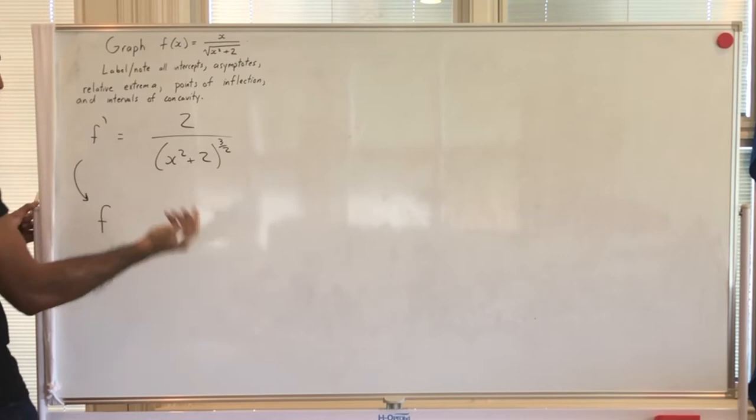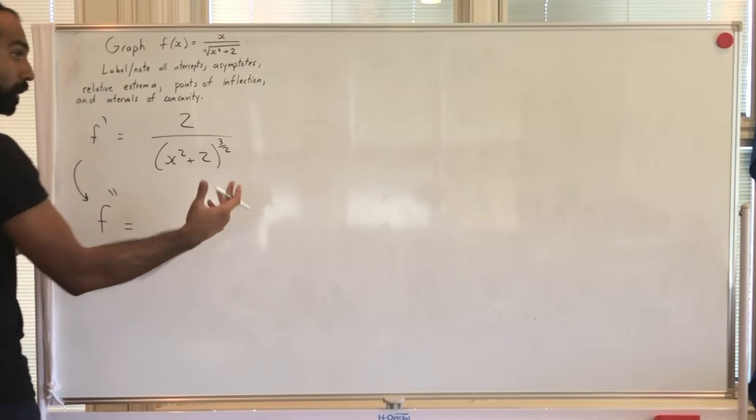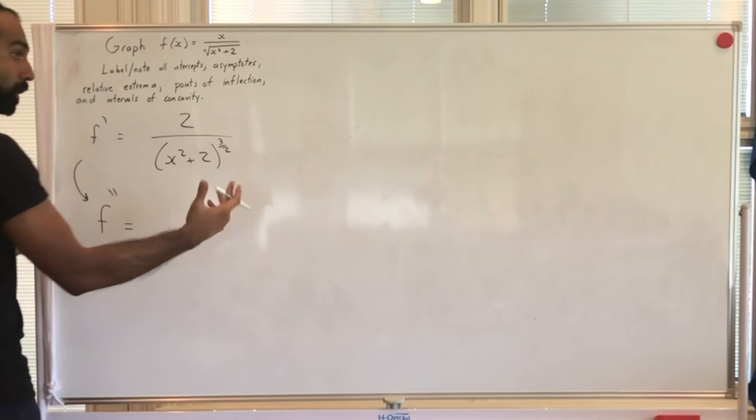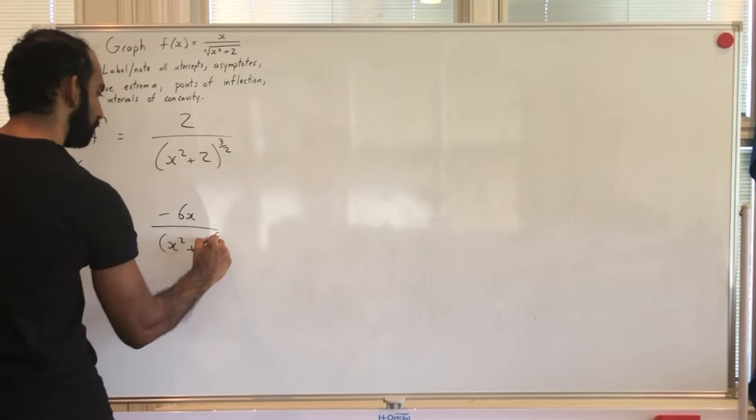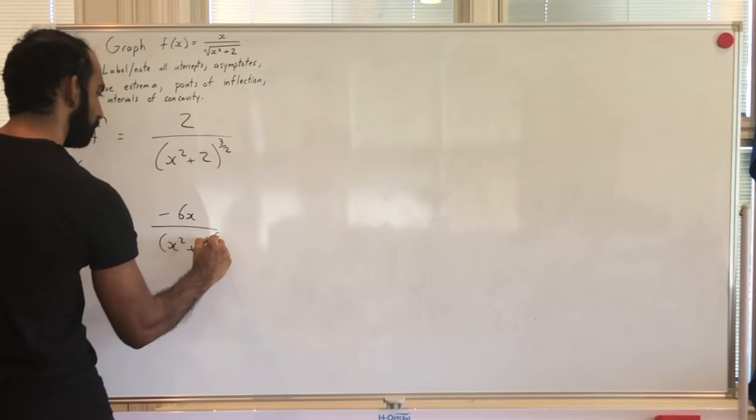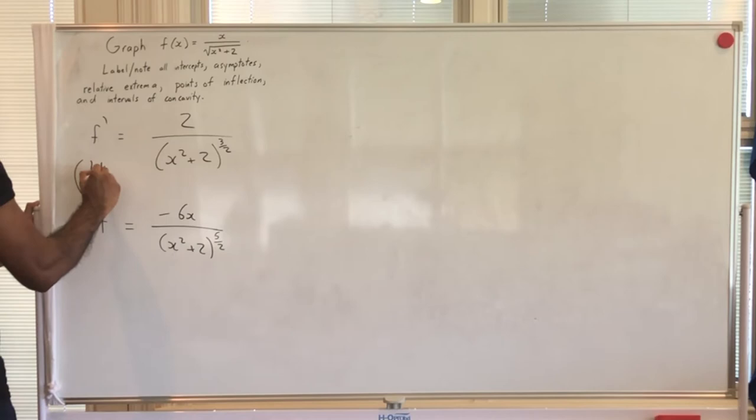Likewise, doing a similar process for the second derivative — the algebra is exactly analogous to what we did for the first — you get negative 6x all over (x² + 2)^(5/2).